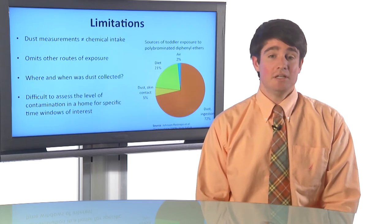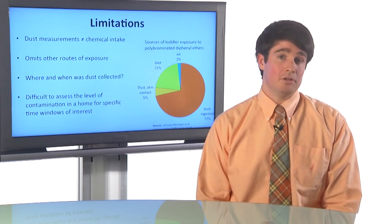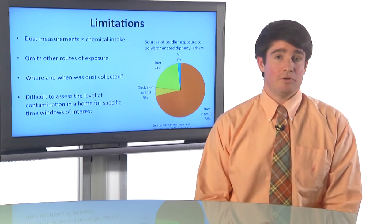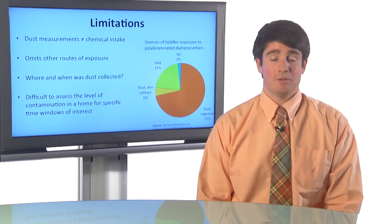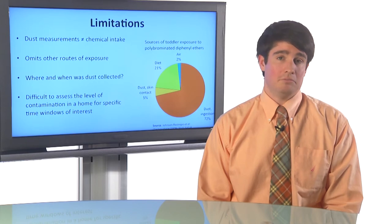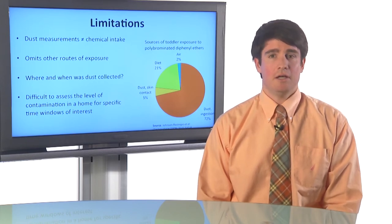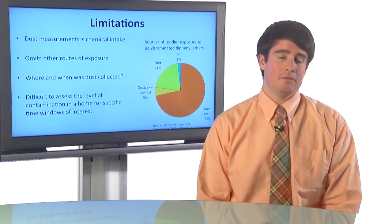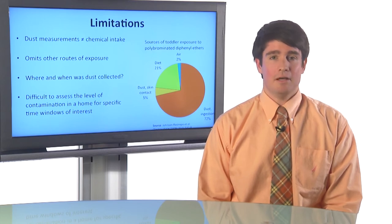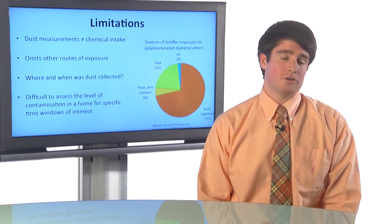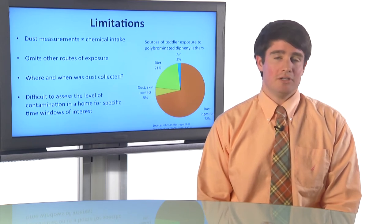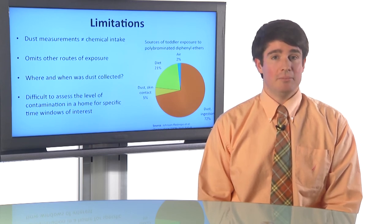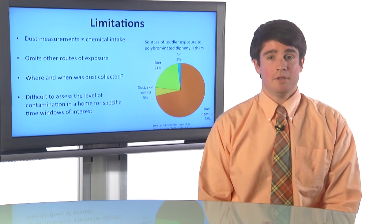Another limitation is that when you use a vacuum dust sample, you don't necessarily know specifically where and at what time the dust was collected. Because if the residents are just using their vacuum cleaners how they usually use them, they're going to be using them in all sorts of different rooms at times where they're not necessarily recording it or thinking about it. So it's hard to really assess exactly where the dust came from and when it was collected. This makes it difficult to assess at a very specific point in time what sort of chemical contamination might have been in a home — you're going to get sort of an average over a long period of time and in many different rooms, and you're not going to know about a specific location or specific time in the history.